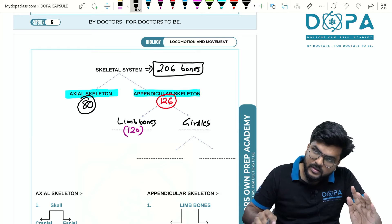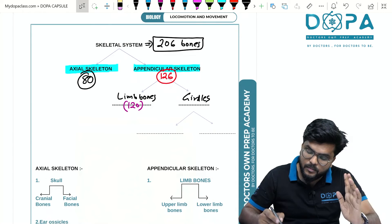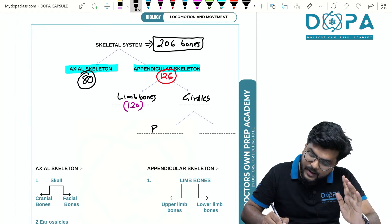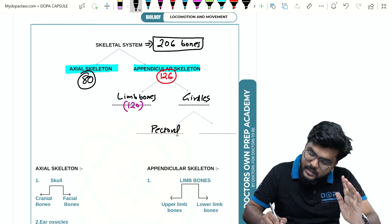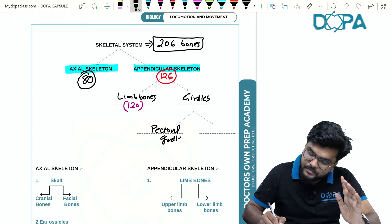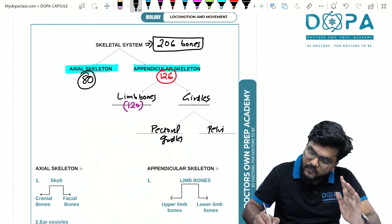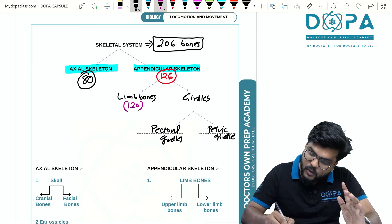Girdle bones can be classified into two parts: there is an upper girdle bone which is simply called pectoral girdles, and we have pelvic girdle.